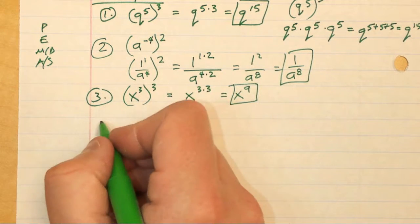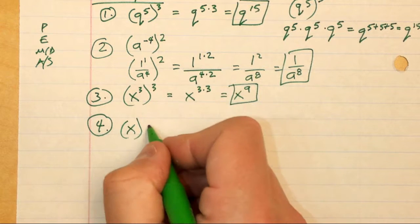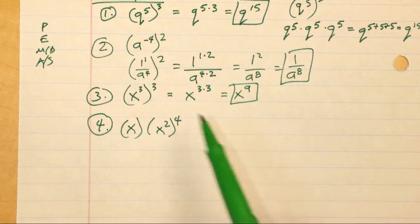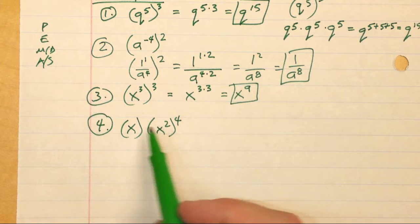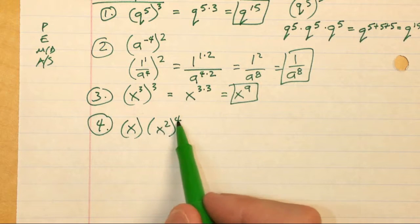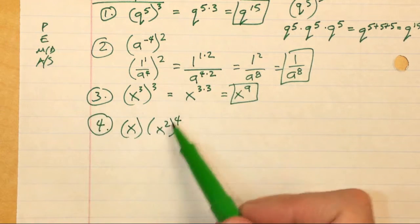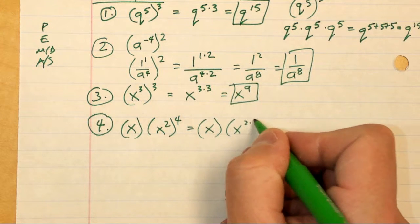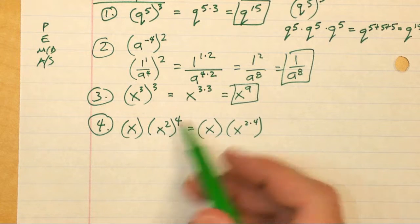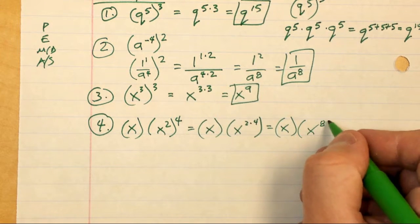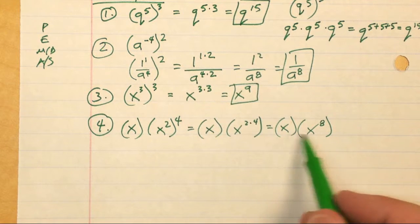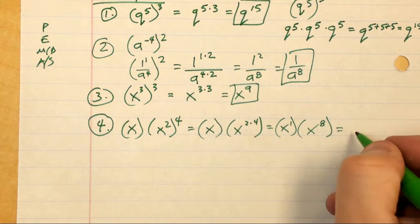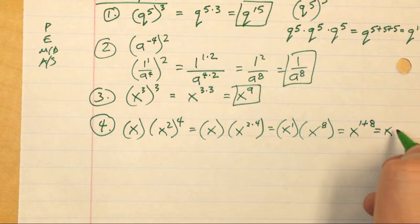The fourth example: I have x times x squared, all raised to the fourth power. Looking at this with order of operations, I can't multiply just yet because I need to deal with the exponent first. There's nothing to simplify in the parentheses, but I can apply the power-to-power rule to x squared, giving me x times x-squared-times-four, which is x times x to the eighth. Now applying the product rule — x is x to the first power — I add the exponents: one plus eight gives me x to the ninth power.